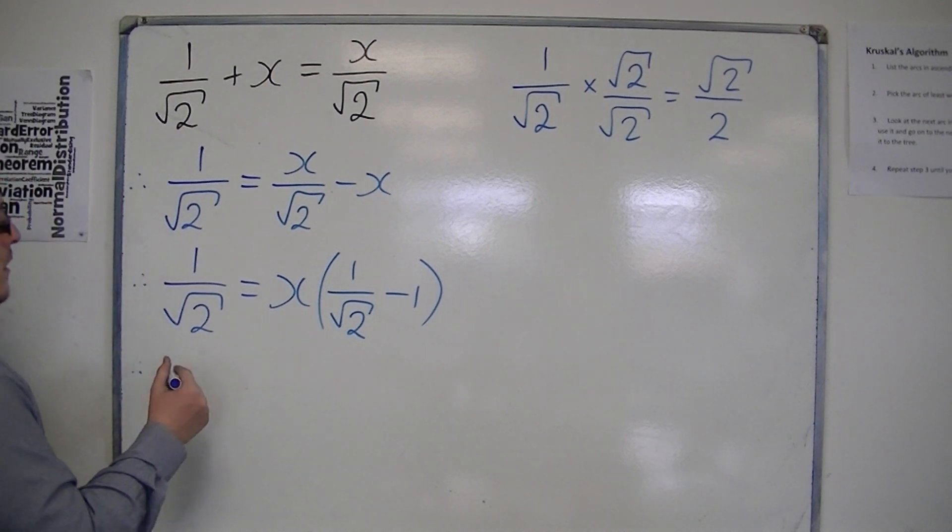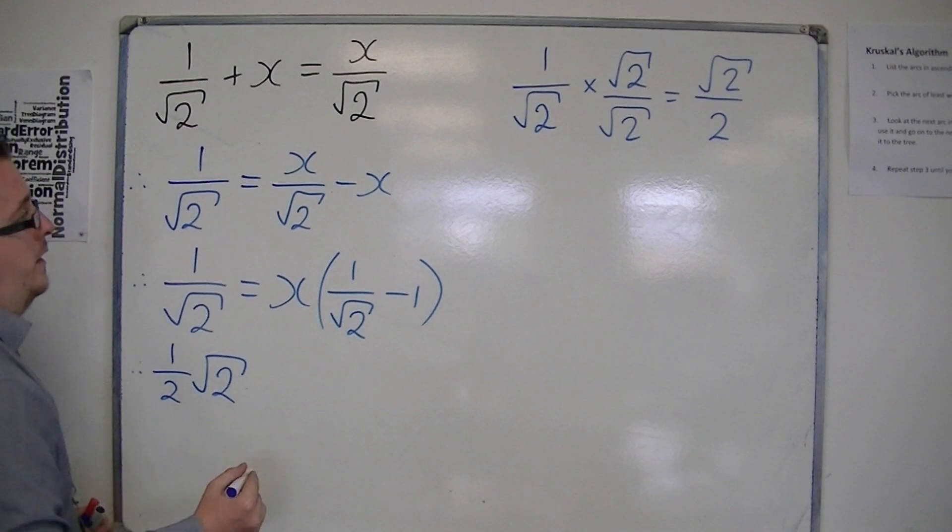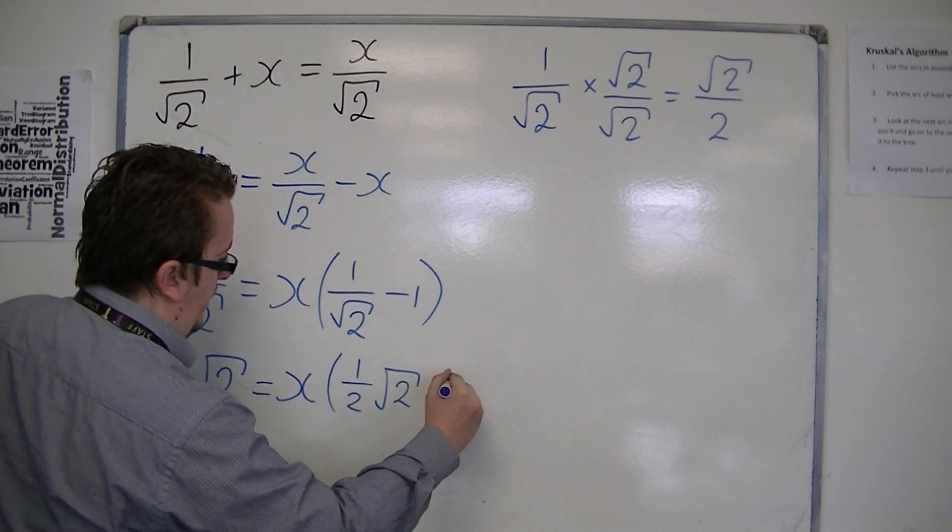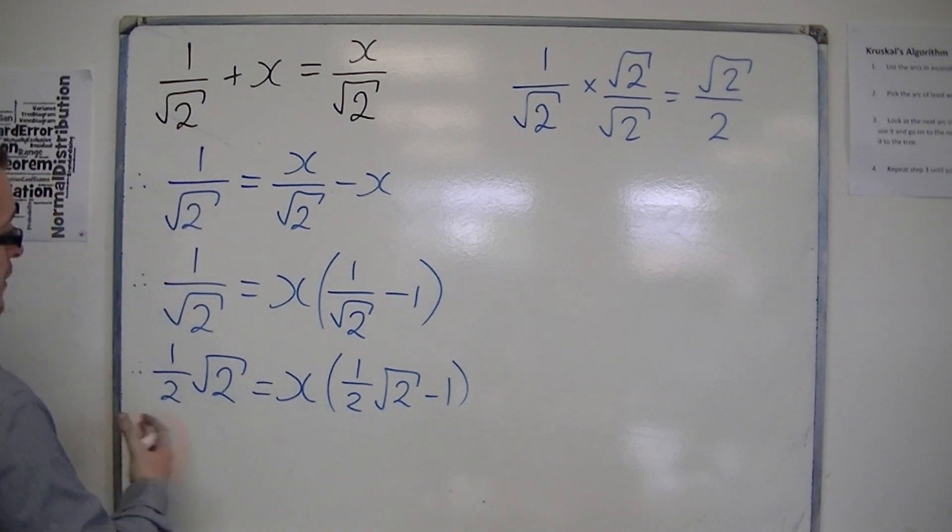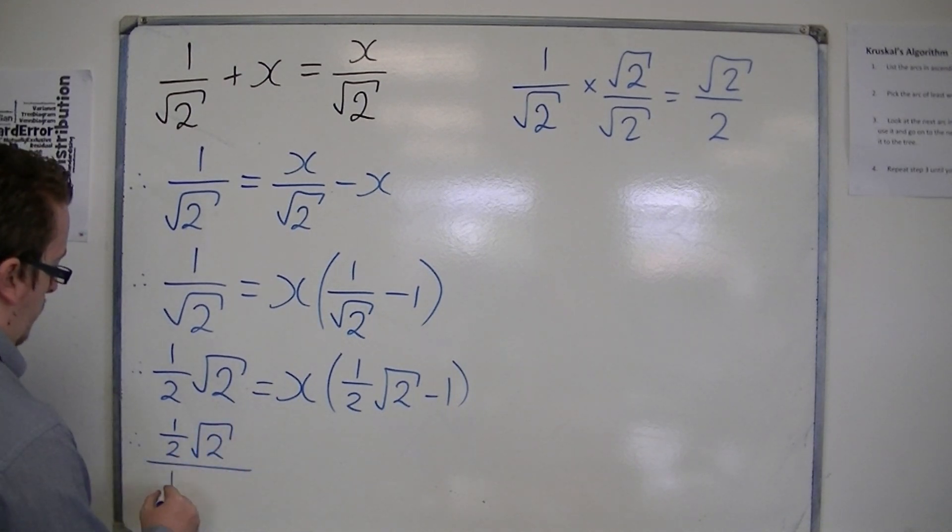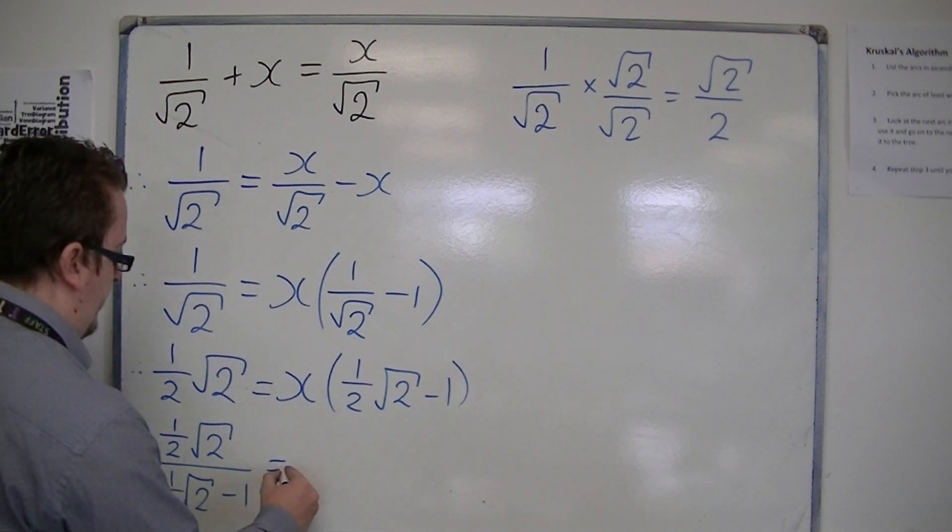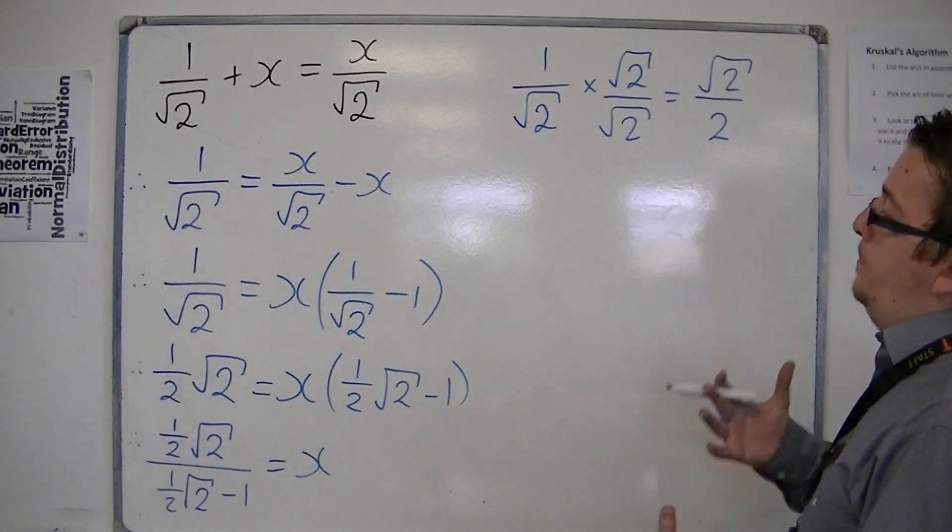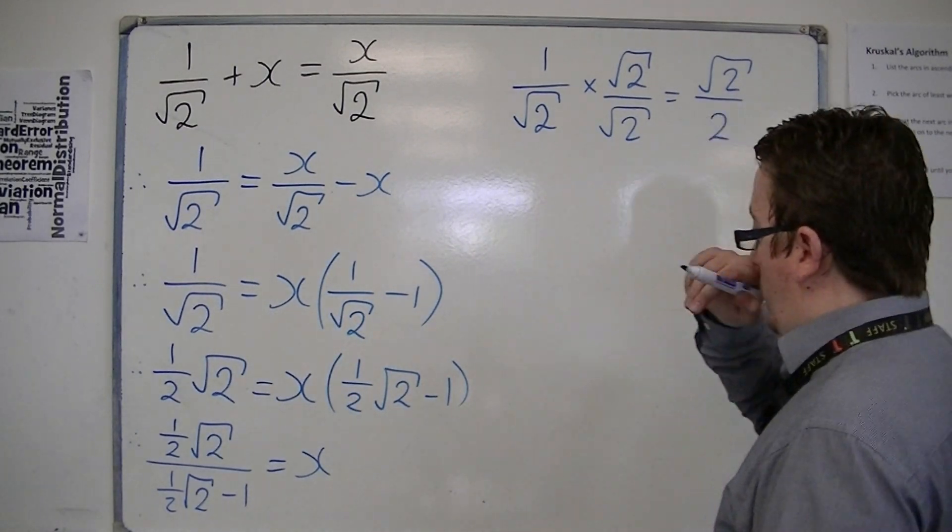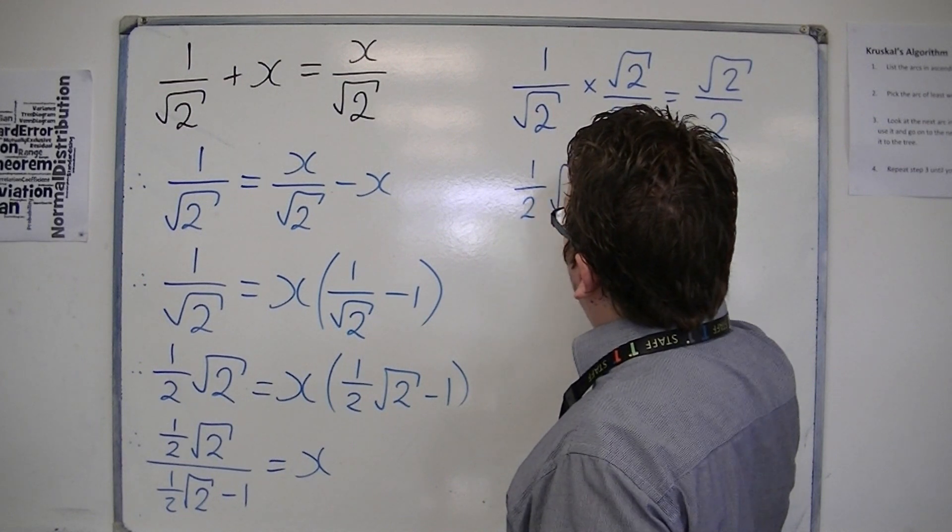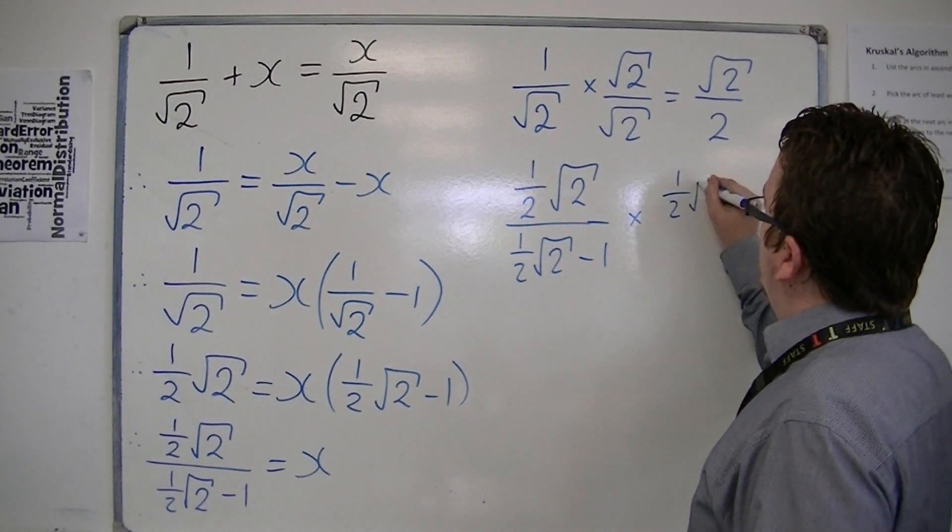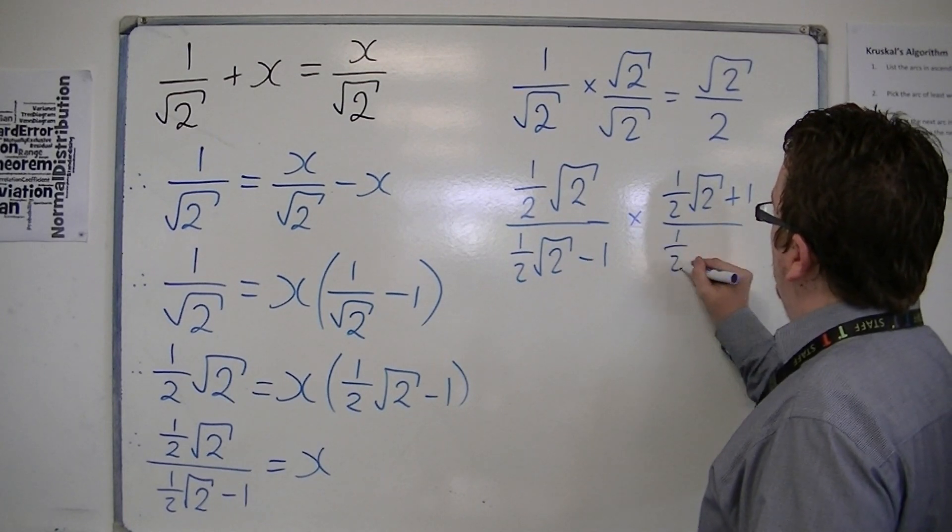So this has become 1 half root 2, because that's the same as root 2 over 2, is equal to x lots of 1 half root 2 take away 1. Then I'm going to divide through by that bracket, so I'm going to get 1 half root 2 over 1 half root 2 minus 1 is the same as x. So you could potentially leave it like that, but if you're then asked to rationalize the denominator, then I'm going to have to. So I'm going to multiply that by 1 half root 2 plus 1 over 1 half root 2 plus 1.